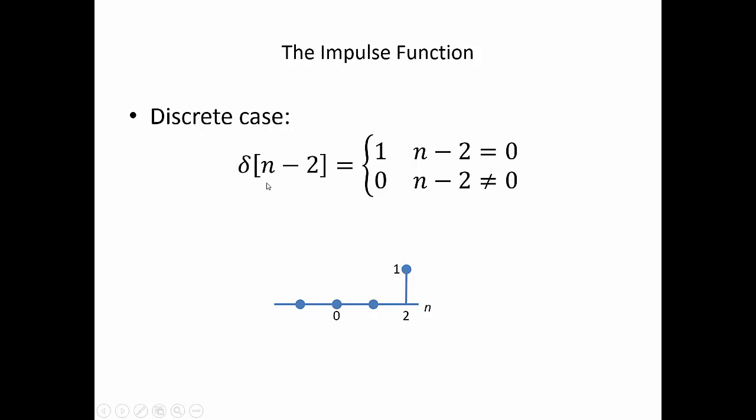We could also shift our function, in which case our argument is now n minus 2, so our argument would then be n minus 2 equals 0, and that occurs when n is equal to 2, and it's 0 when n is not equal to 2 all the other times. This amplitude is still 1.